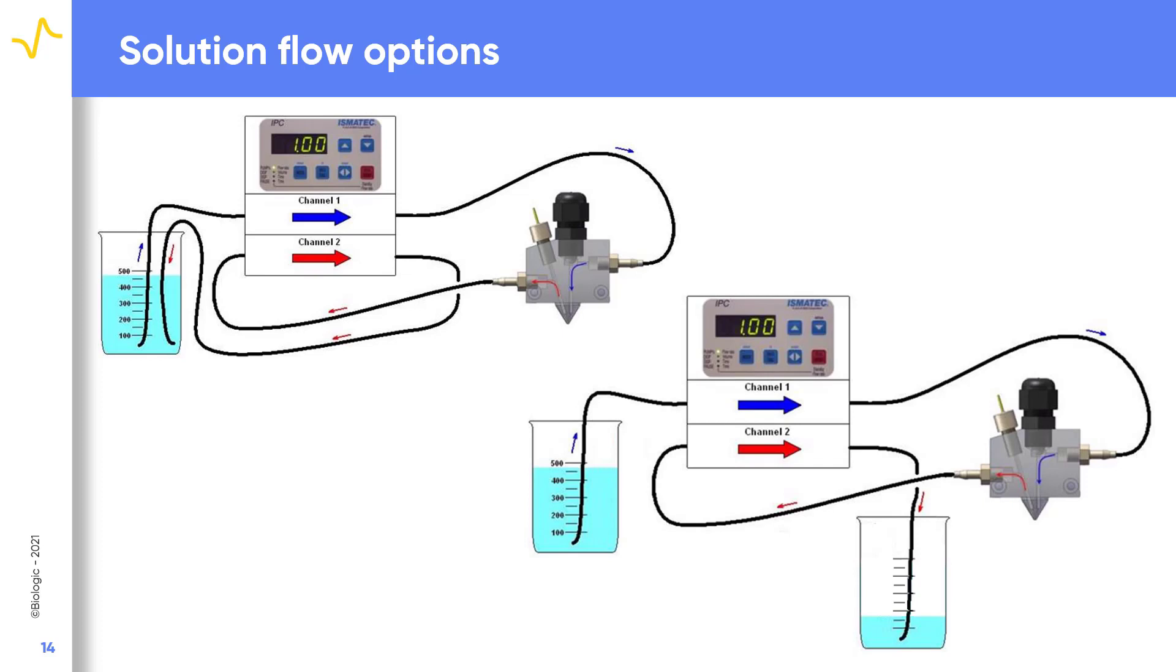In the second option, after the solution has flowed through the head, it is deposited into a different reservoir. This is particularly useful when a lot of product is produced during the electrochemical measurement, which could otherwise be detrimental to the measurement.